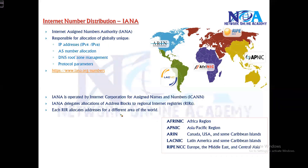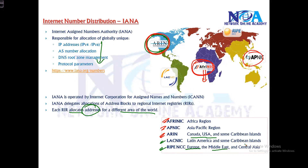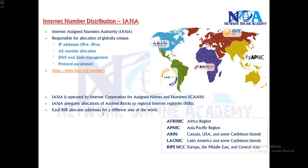The job of the RIR is to allocate addresses to different areas of the world. There are five RIRs. We have AFRINIC for the African region, APNIC for the Asia Pacific region, ARIN looking after Canada, the US, and mostly North American countries, LACNIC for Latin America, and RIPE NCC for Europe, Middle East, and Central Asia.